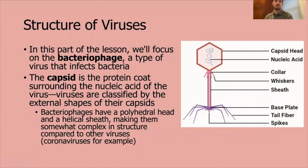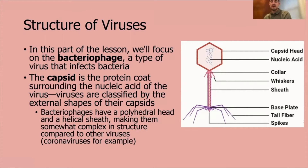For the first part of the lecture, we're going to focus on a specific type of virus called the bacteriophage — the type of virus that infects bacteria only. This is the representation of a virus you'd most often see in pop culture. Looking at the 2D diagram, you can see the capsid head, which is the protein coat surrounding the nucleic acid inside. Most viruses are classified by the external shapes of their capsids. These bacteriophages have a polyhedral head, and they also have a helical sheath. Because they have multiple different shapes, we consider their structure complex.